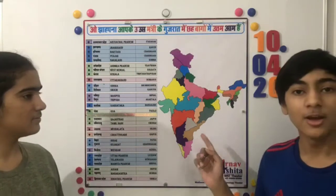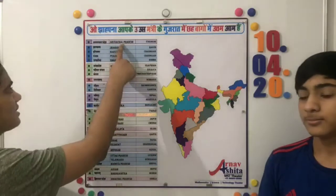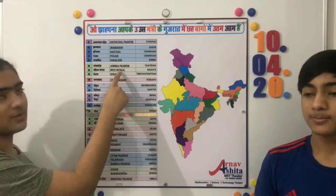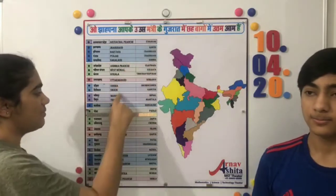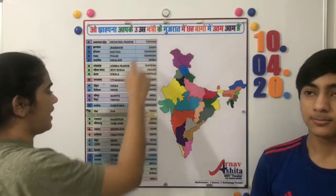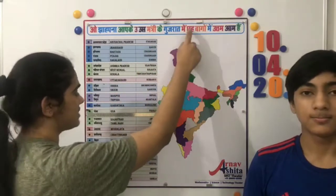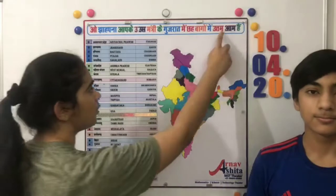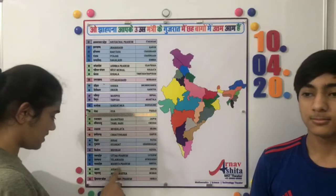For the states, the mnemonic is: 'O Jharkhand Haryana Punjab Nagaland Aapke Andhra Pradesh Bengal Kerala O Uttarakhand Us Odisha Sikkim Mantri Manipur Tripura Karnataka Gujarat Goa Rajasthan Tamil Nadu mein Meghalaya 366 Gart Baago Bihar Gujarat mein Mizoram Uttam Uttar Pradesh Telangana Madhya Pradesh Aam Assam Maharashtra hai Himachal Pradesh.'